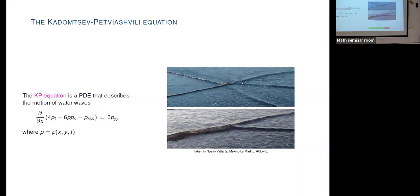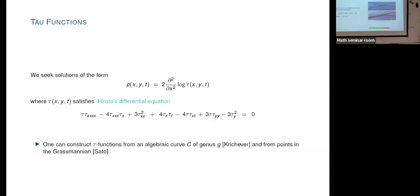I need to move on to water waves. Back to the KP equation — another direction in physics, a partial differential equation in three variables. There is a bilinearization called Hirota's differential equation. If a function τ(x,y,t) satisfies this equation, then the second derivative of log τ with respect to x satisfies the KP equation. So we can look for these solutions called tau functions.